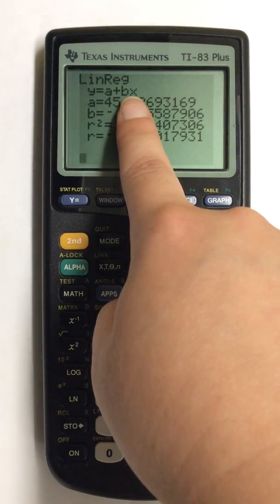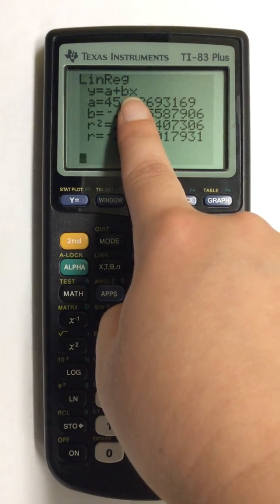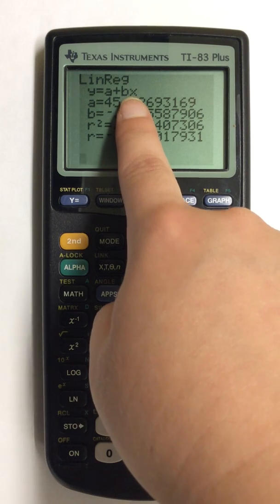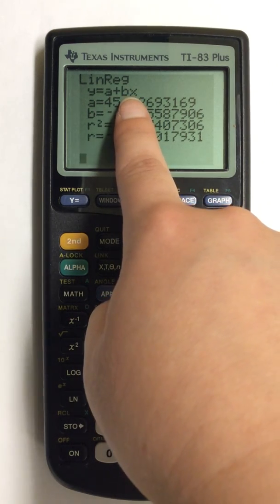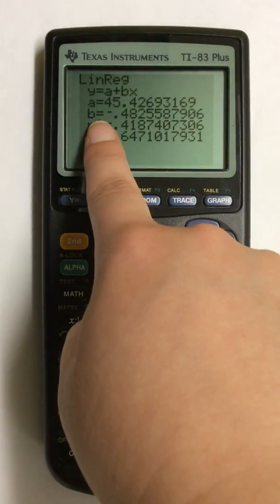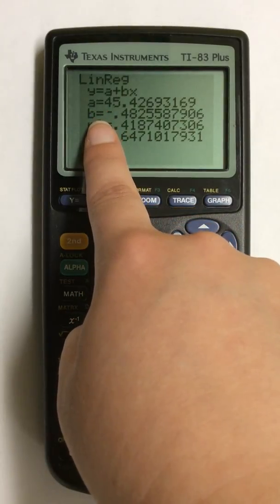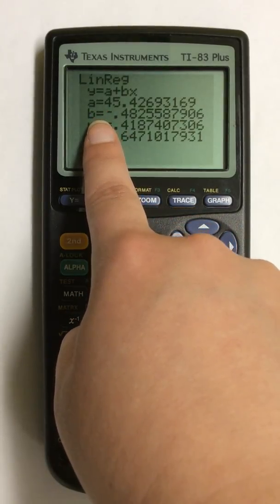It's A plus BX. That's the basic form of your regression line. A and B are numbers shown right below. So for my line,